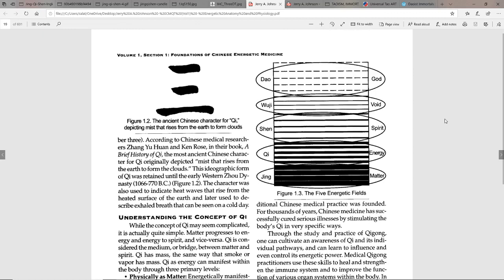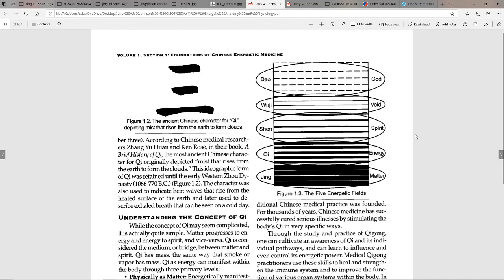That's what we are - everything is energy. So if you look at this, the five energetic fields: you could relate jing to matter, chi to energy, shen to spirit, wuji is the void, and then the dao you could view as prime creator or god. There's different ways of looking at this as well on different systems.